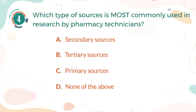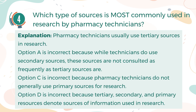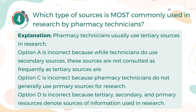The correct answer is B, Tertiary sources. Explanation: Pharmacy technicians usually use tertiary sources in research. Option A is incorrect because while technicians do use secondary sources, these sources are not consulted as frequently as tertiary sources. Option C is incorrect because pharmacy technicians do not generally use primary sources for research. Option D is incorrect because tertiary, secondary, and primary resources denotes sources of information used in research.